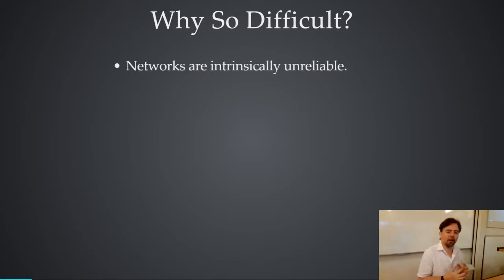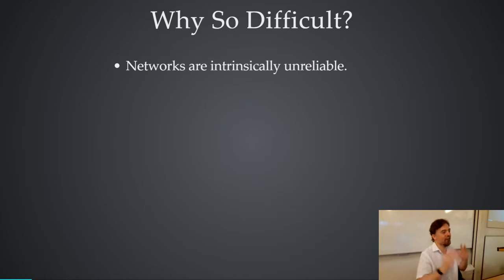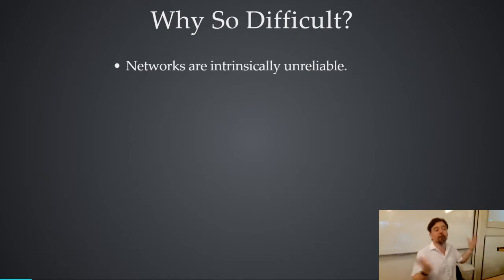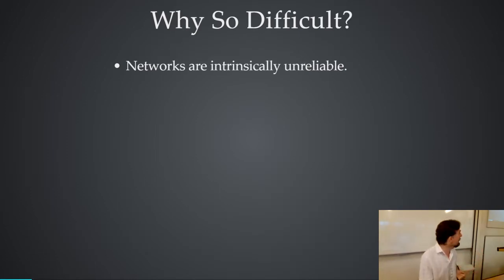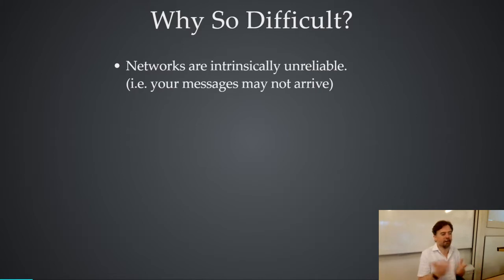One thing about networks is they're intrinsically unreliable. Computers themselves nowadays are for the most part reliable — they execute instructions faithfully. But networks are not reliable. As soon as you put a signal on a wire to send it a long distance, or do it wirelessly, there are all sorts of sources of interference and error. One thing is that when you send messages over a network, there's no fundamental guarantee that they'll arrive — you send things and they just don't get to where they're going.